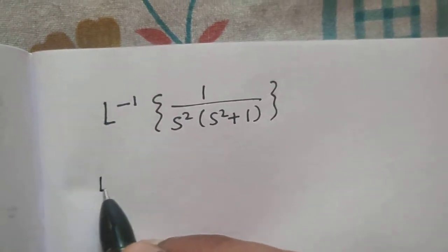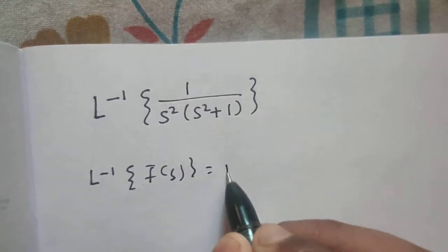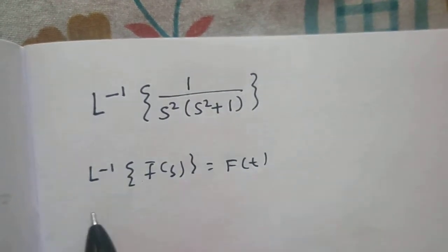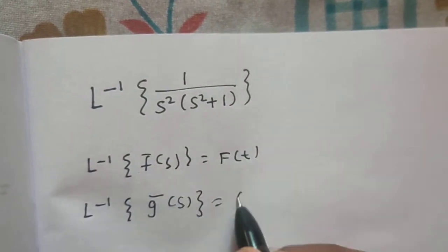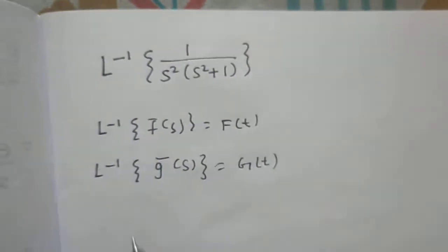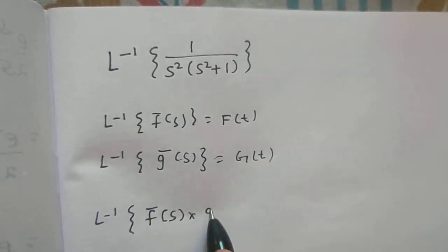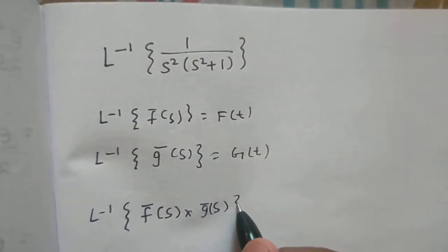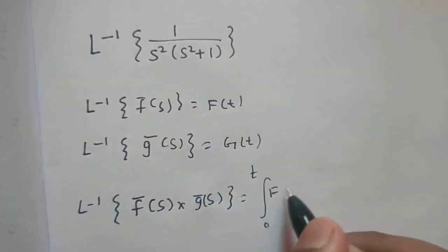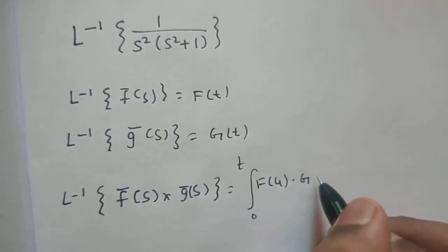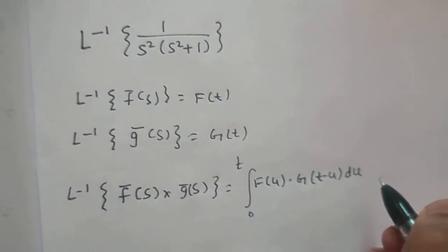We know the basic idea of the convolution theorem, which states that if the Laplace inverse of F-bar(s) is capital F(t), and the Laplace inverse of G-bar(s) is capital G(t), then the Laplace inverse of F-bar(s)·G-bar(s) is the integral from 0 to t — replacing t by u in the first and t by t minus u in the second — integrated with respect to u.